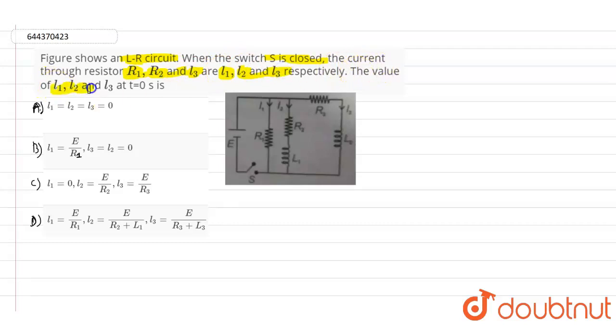The value of i1, i2, and i3 at t equals 0. So here we need to find out the value of the currents i1, i2, and i3 when the switch is closed.